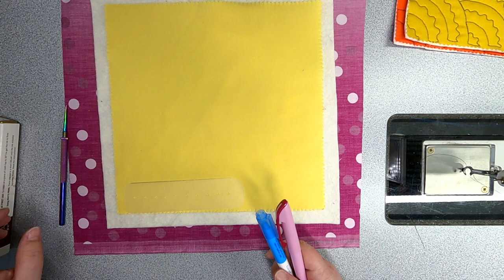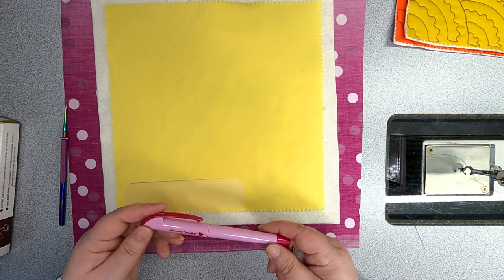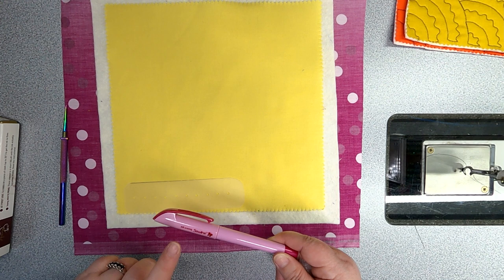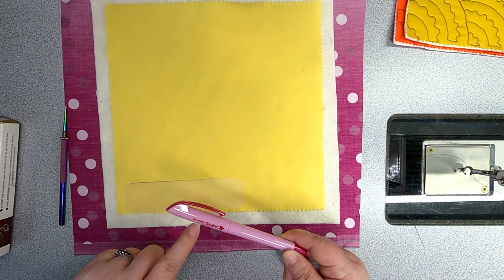This pen is an air erasable marker and this one is really only good if you are super speedy. I marked a small sample with this and I thought it was water soluble but it was air erasing and so it was kind of a race to finish the quilting on it before it all disappeared. So I would say use this only if you are working on a really small area with this design.